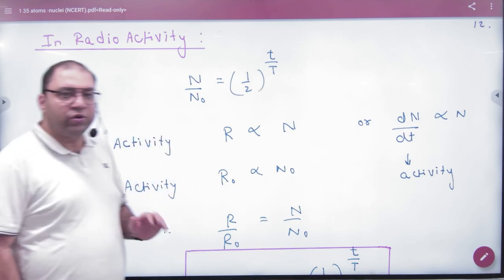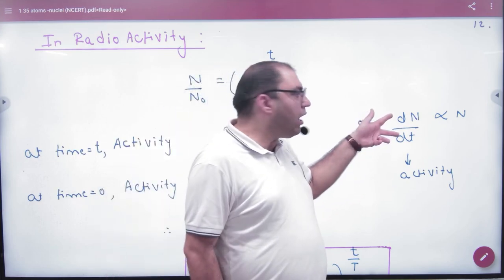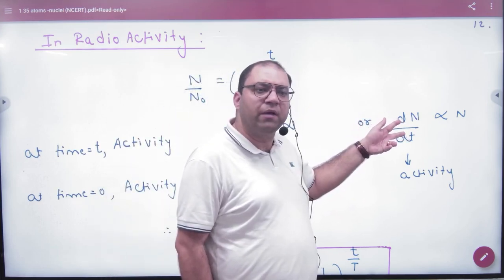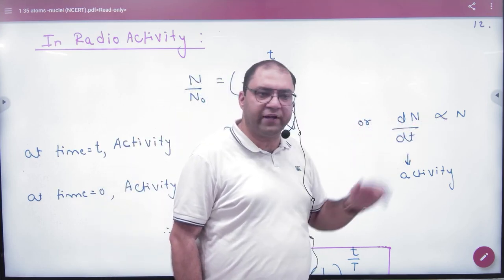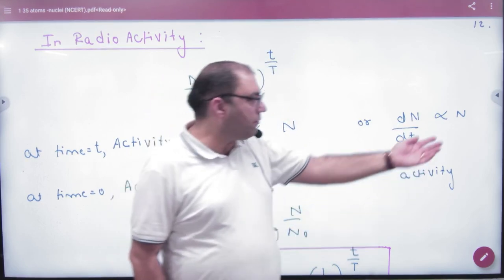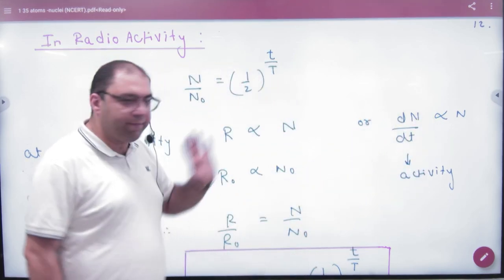Now I know that radioactivity, or activity R, or dN by dt, is proportional to the number of atoms left at any time, N.